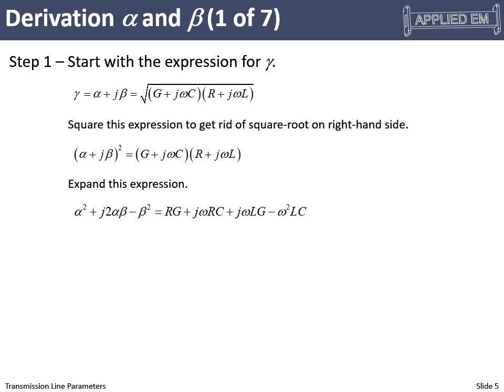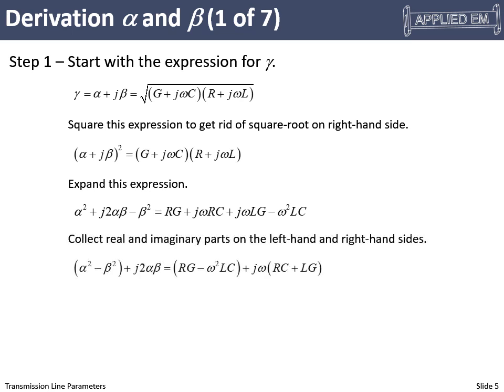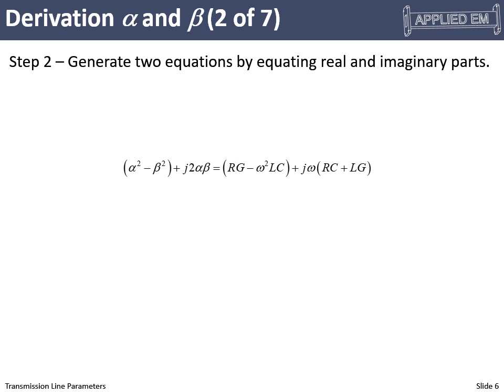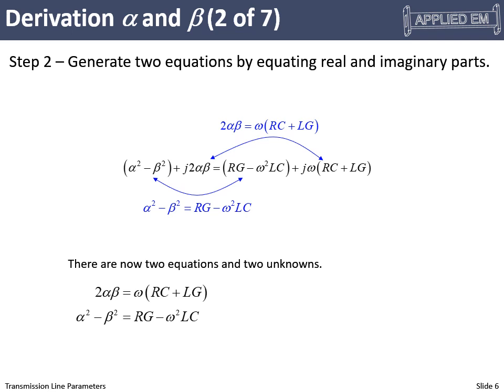We collect real and imaginary parts on both sides of the equation. On the left we have something purely real plus j times a bunch of constants, and on the right we have a real part and an imaginary part. We set the real part on the left equal to the real part on the right, and the imaginary part equal to the imaginary part. This gives us two equations, which is good because we have two unknowns — alpha and beta.